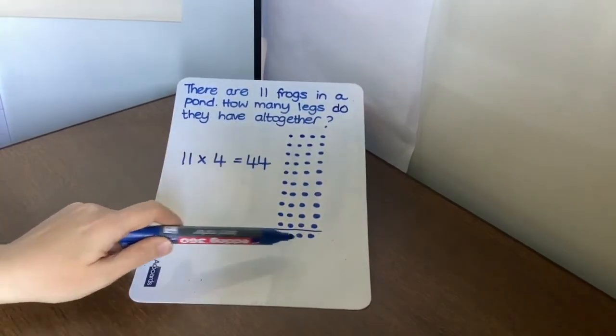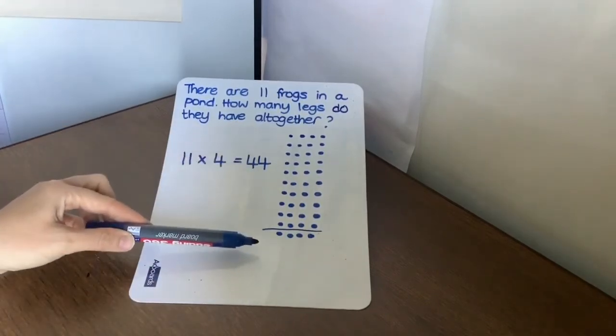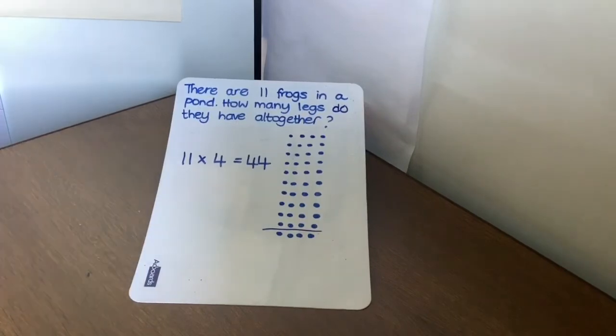So all we have to do is add on another 4. So we had 11 groups of 4 instead of 10 groups of 4. So there's our 44. So sometimes some of your known facts will help you work out other facts.